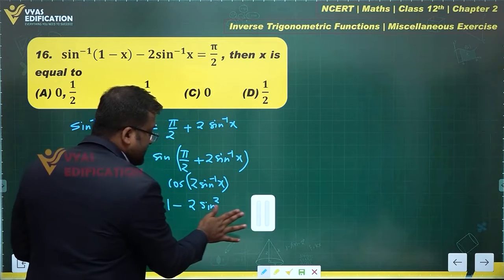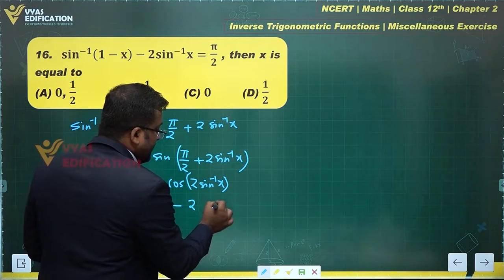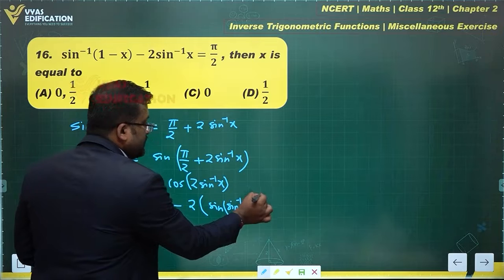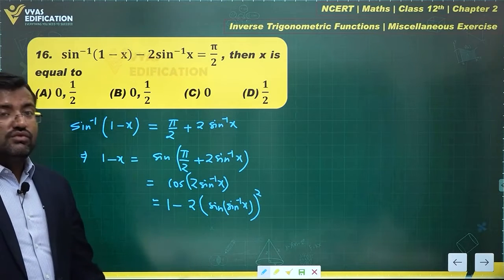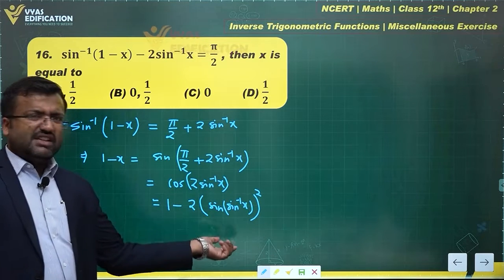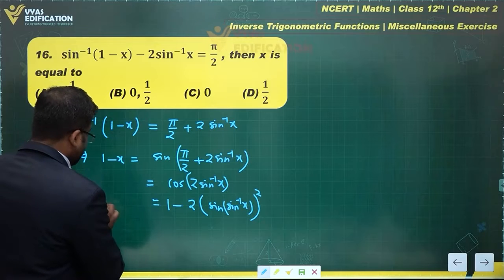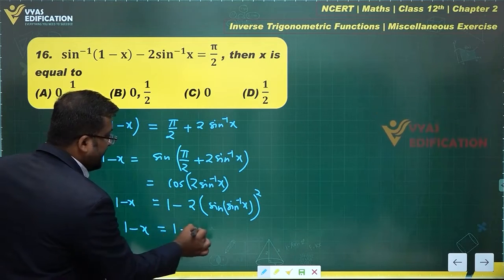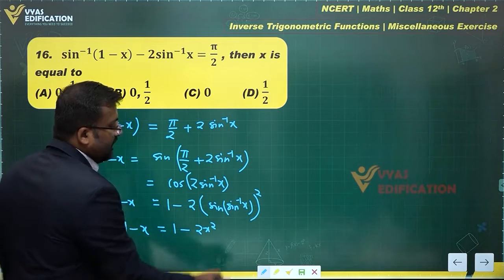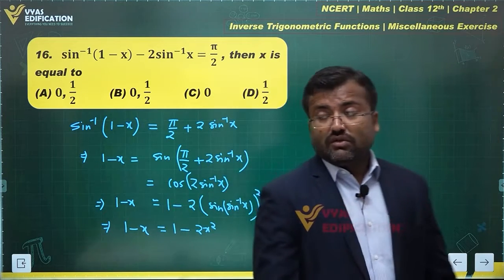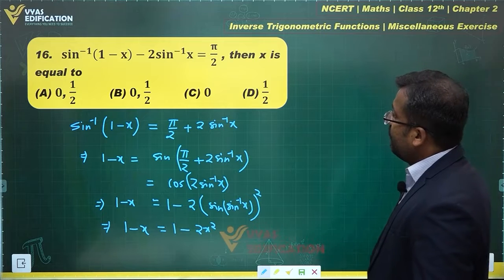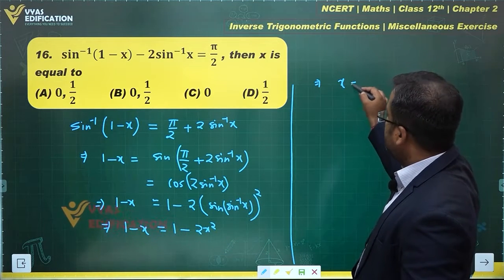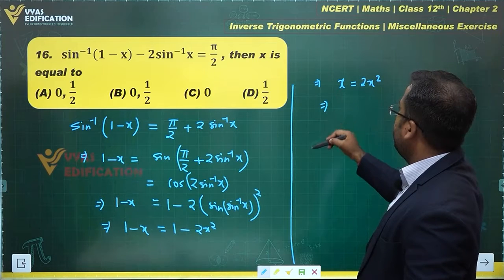Using cos(2θ) = 1 - 2sin²θ with θ = sin⁻¹(x), we get 1 - 2sin²(sin⁻¹(x)). What is sin(sin⁻¹(x))? That's simply x. So this gives me 1 - x = 1 - 2x².